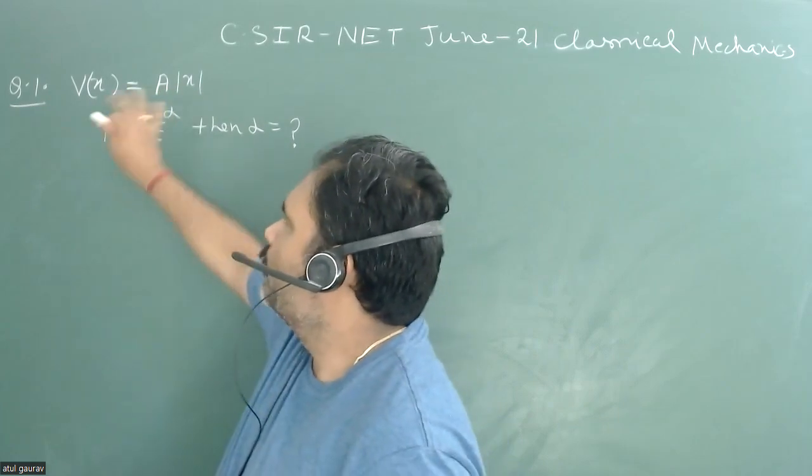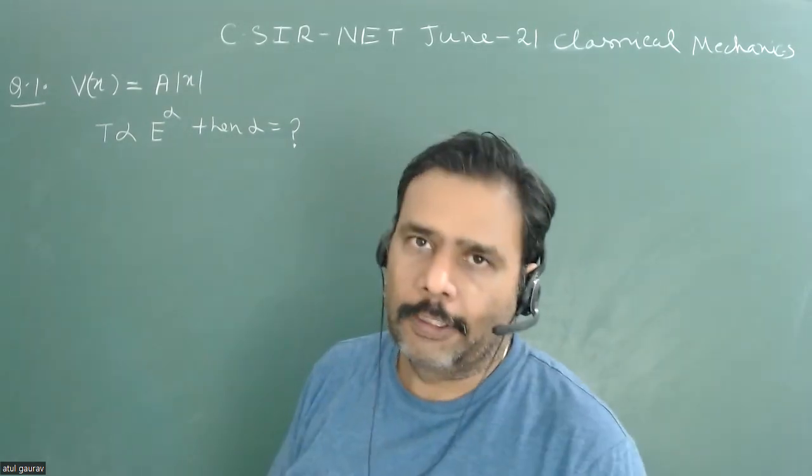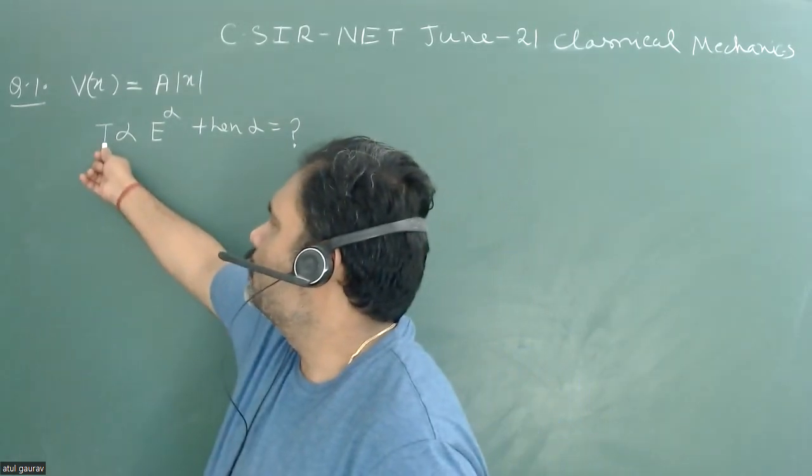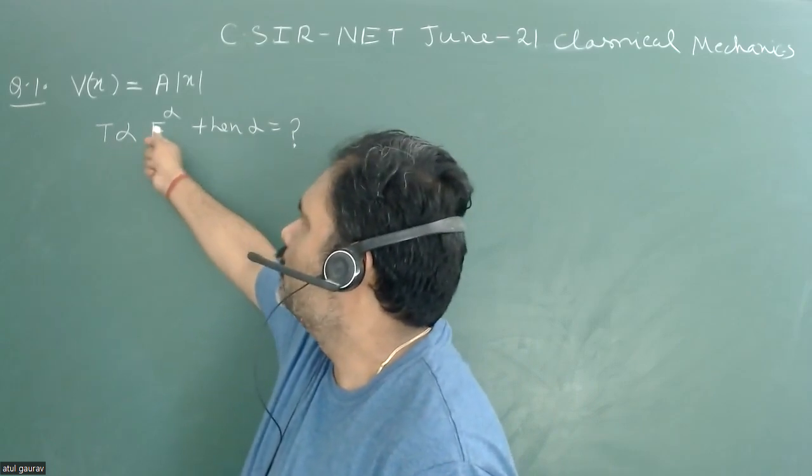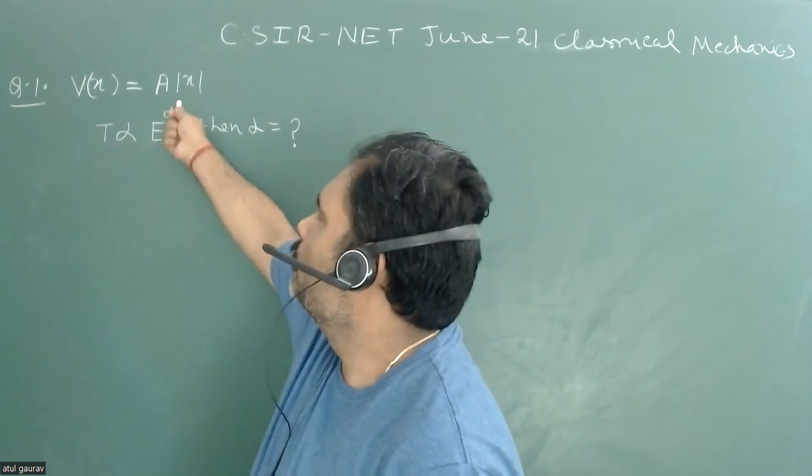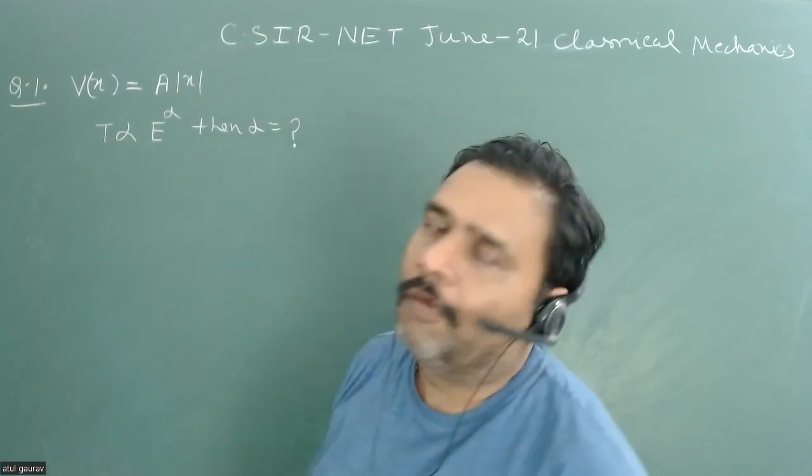If this is our potential and the particle has some periodic motion, and the time period of this particular motion is proportional to E to the power alpha, then we have to find the value of alpha.